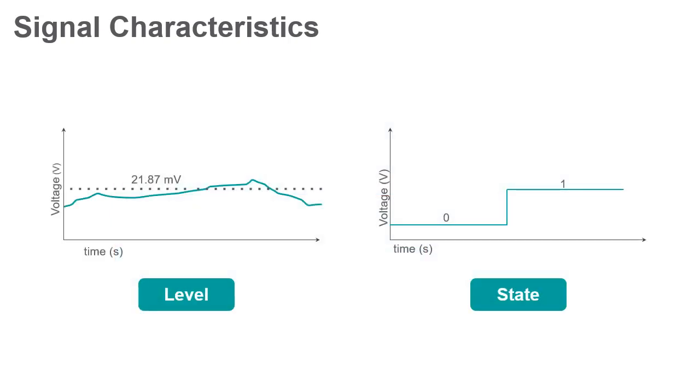Level describes the steady state magnitude of an analog signal at a point in time. The digital equivalent is state, which refers to the value of a signal at a point in time.